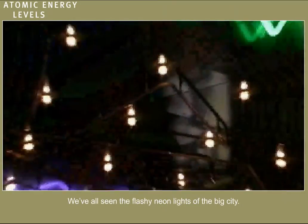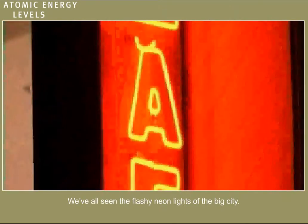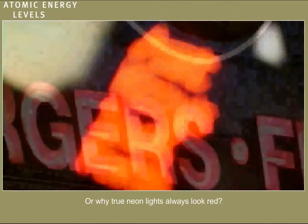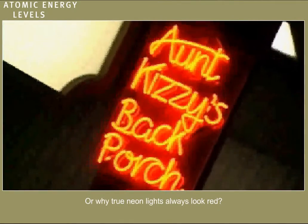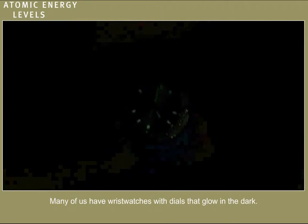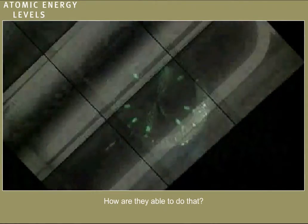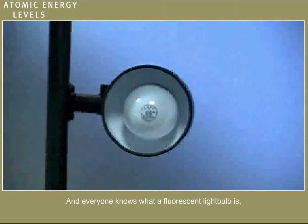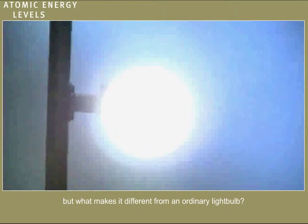We've all seen the flashy neon lights of the big city. But have you ever wondered how those lights work? Or why true neon lights always look red? Many of us have wristwatches with dials that glow in the dark. How are they able to do that? And everyone knows what a fluorescent light bulb is. But what makes it different from an ordinary light bulb?